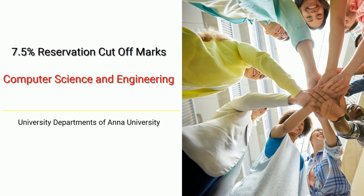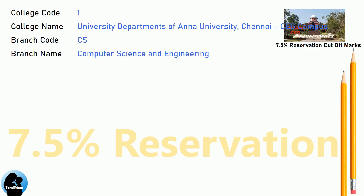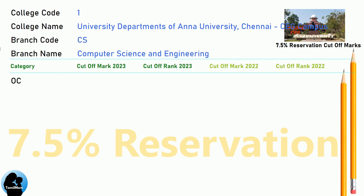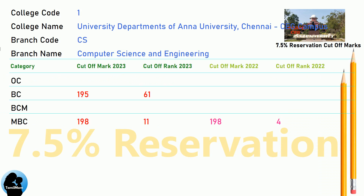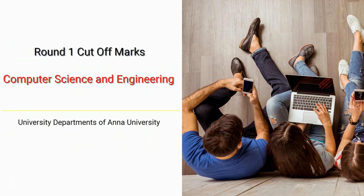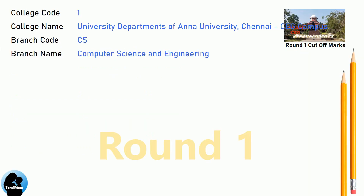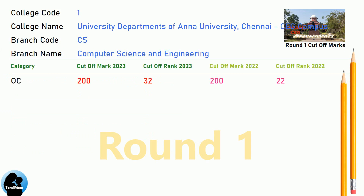DNA 7.5 Reservation Cut-Off for Anna University Chennai CEG Campus in Computer Science and Engineering. DNA 8.5 Reservation Cut-Off for Anna University Chennai CEG Campus in Computer Science and Engineering. DNA Round 1 Cut-Off for Anna University Chennai CEG Campus in Computer Science and Engineering.